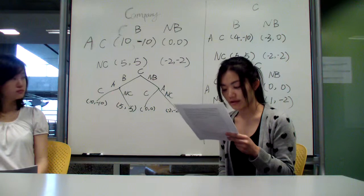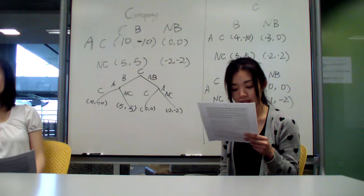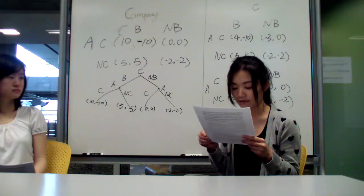We hope to see that the applicants tend to choose not to cheat, and the company prefers to believe in the applicants. Then we could reach an ideal situation. That is to say, if the Nash equilibrium is changed to not cheat and believe, this would be the best case.